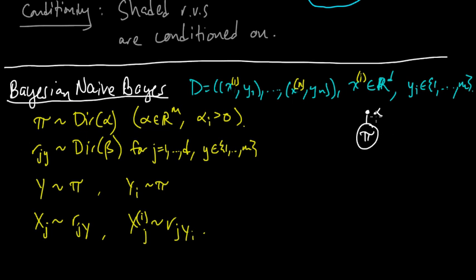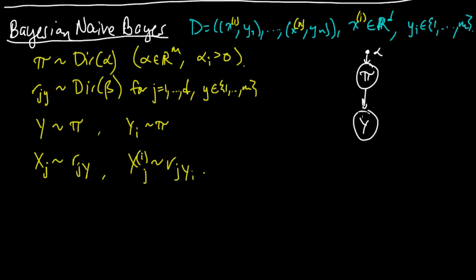So what's the graphical model for this? So let's write it down. We have π, and it had this little, let's go ahead and use the convention of using a dot for a parameter, α. And then we had, we had these r_j's, but let's go ahead and put y here.